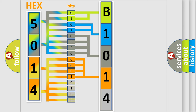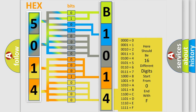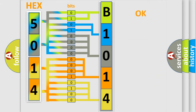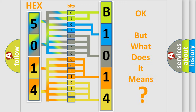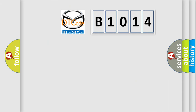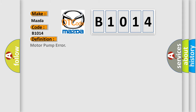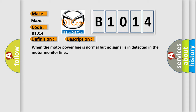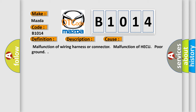The combination of the last four bits defines the fifth character. A single byte conceals 256 possible combinations. We now know in what way the diagnostic tool translates the received information into a more comprehensible format. The number itself does not make sense if we cannot assign information about what it actually expresses. So, what does the diagnostic trouble code B1014 interpret specifically for Mazda? The basic definition is motor pump error. When the motor power line is normal but no signal is detected in the motor monitor line, this diagnostic error occurs most often in these cases: malfunction of wiring harness or connector, malfunction of HECU, or poor ground.